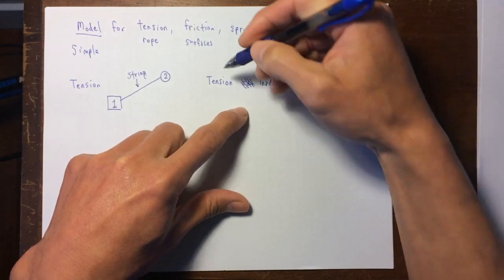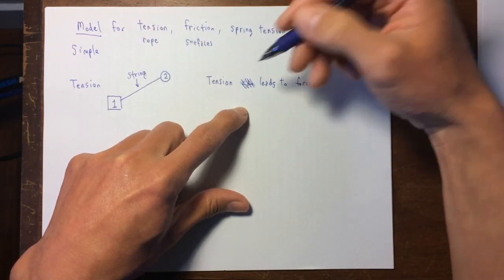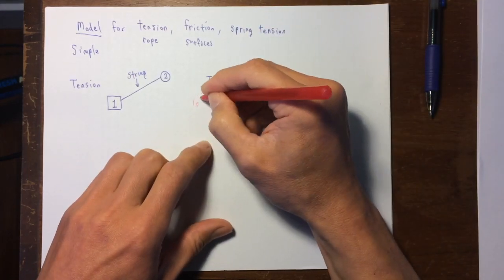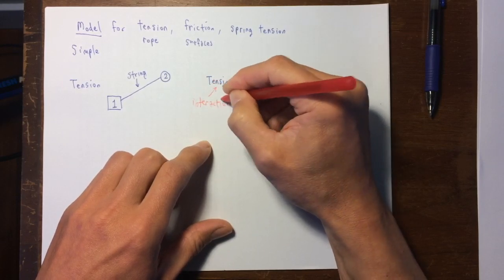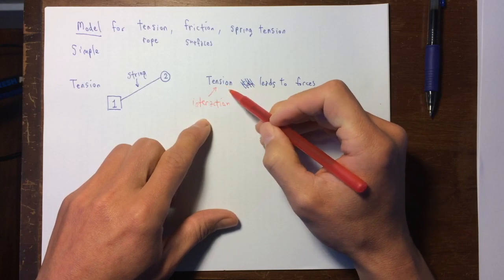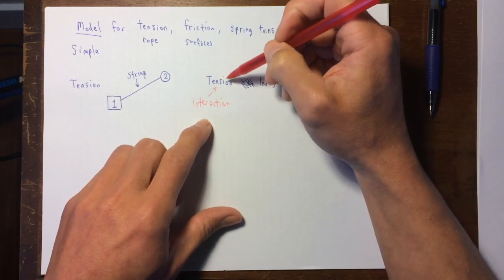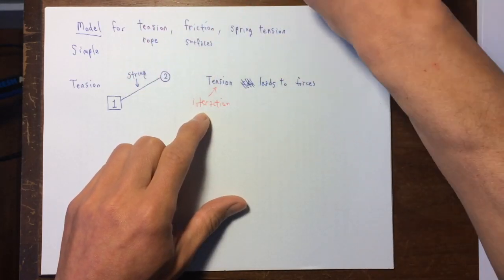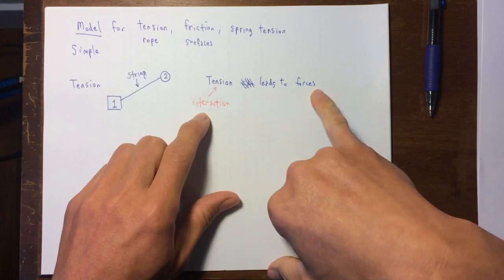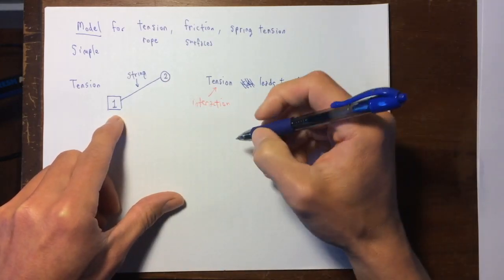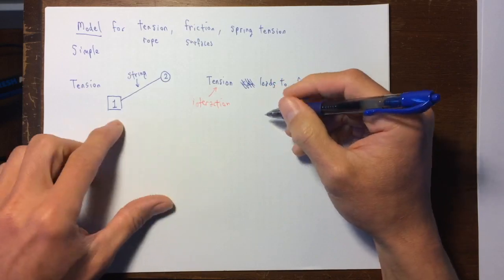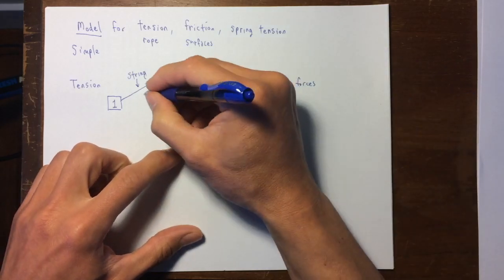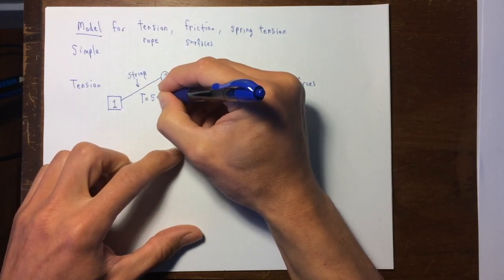Let's just say the tension on the string leads to forces. So tension is the interaction, or we can say that tension is an example of a way that these two objects, number one and number two can interact. And under this tension, there can be forces on the two objects, one and two. As a particular example, let's say that the tension in this string is 50 Newtons.